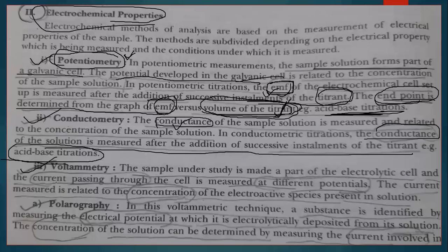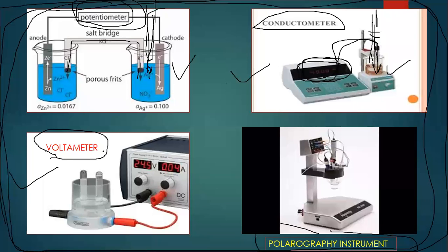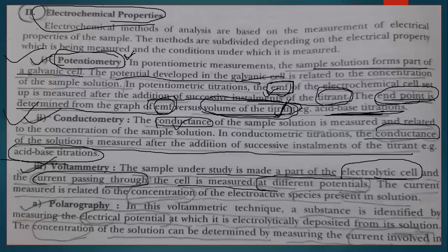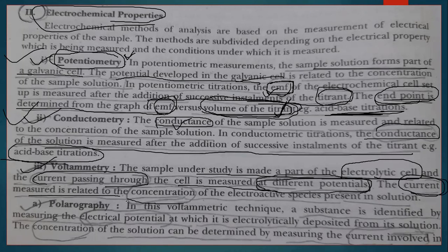In voltammetry, the sample under study is made part of an electrolytic cell. The current passing through the cell is measured at different applied potentials. We apply different potentials and measure the resulting current. This helps us find the concentration of electroactive species present in the solution.